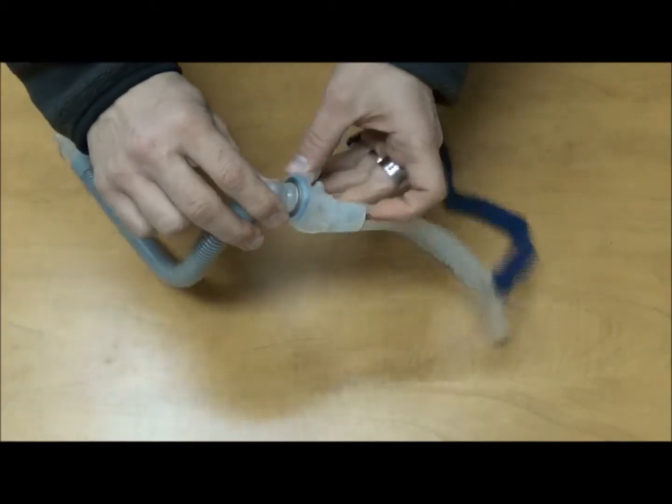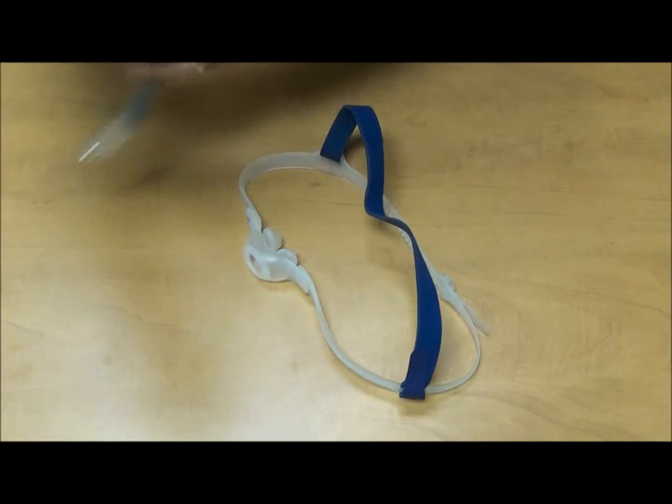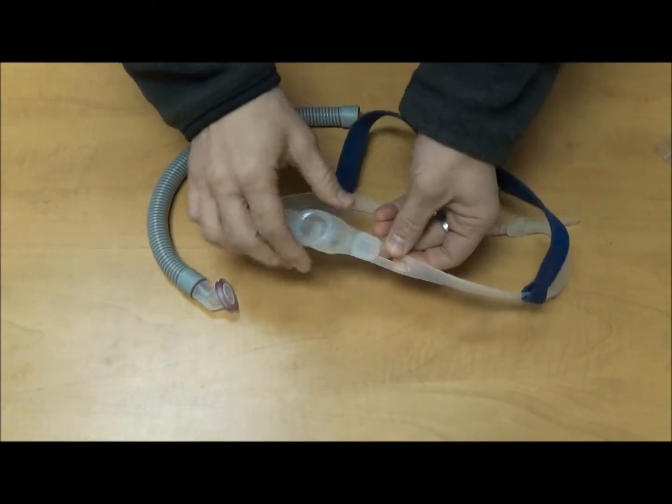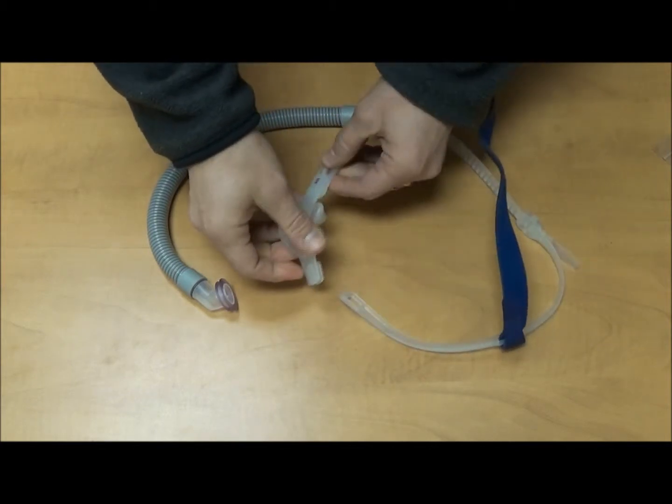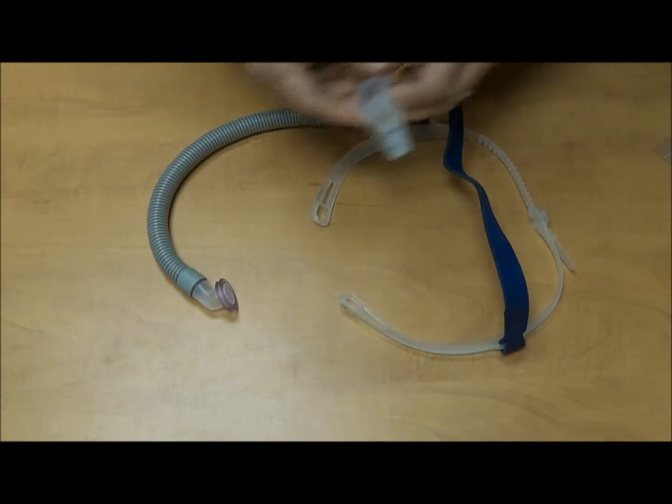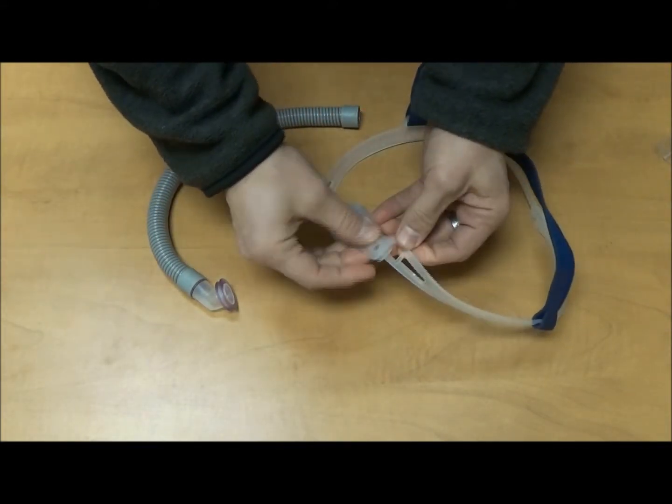First step, we're going to take this front tubing assembly right out of there. Although the Swift FX for her comes with a medium, we're going to make this extra special and put on the small size, which is specific to the Swift FX for her package.